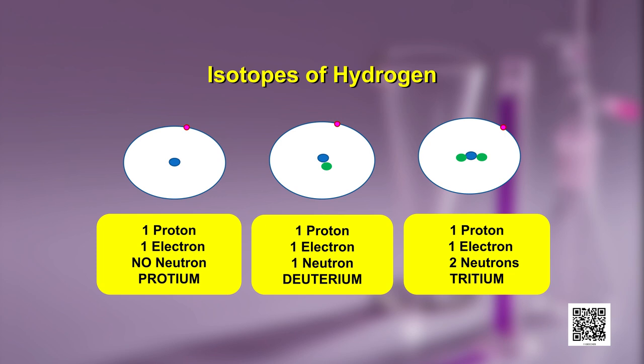The second isotope of hydrogen, which has one neutron, is known as deuterium — it also has only one proton and one electron. The third isotope of hydrogen, namely tritium, has two neutrons, and again the number of protons remains one and the electron is also one in tritium. You can see the structures of all three isotopes and realize that they differ from each other in the number of neutrons: protium has no neutron, deuterium has one neutron, and tritium has two neutrons.